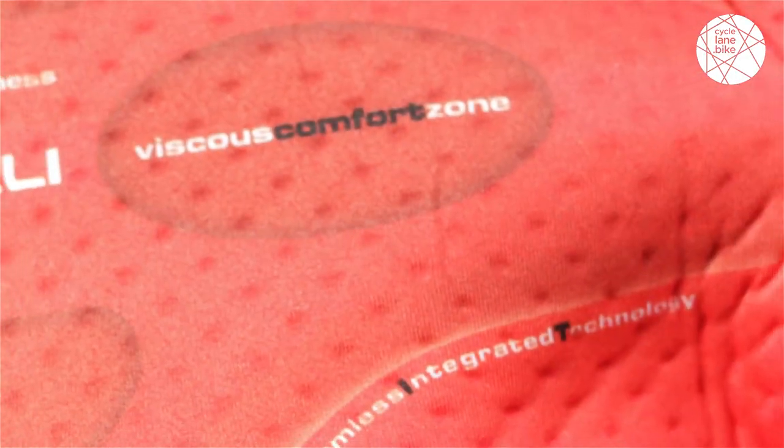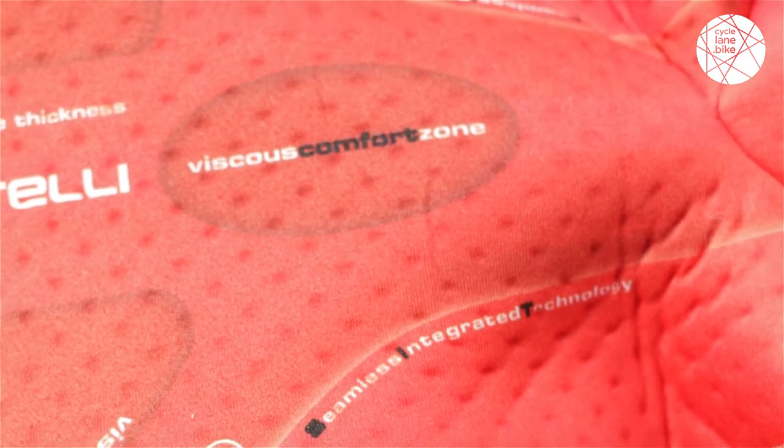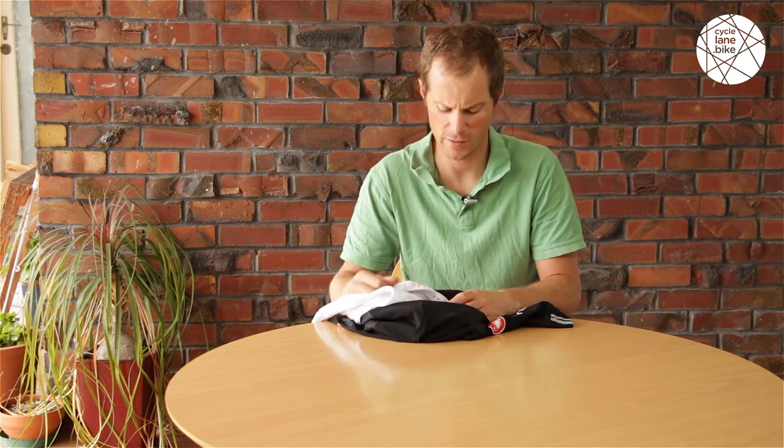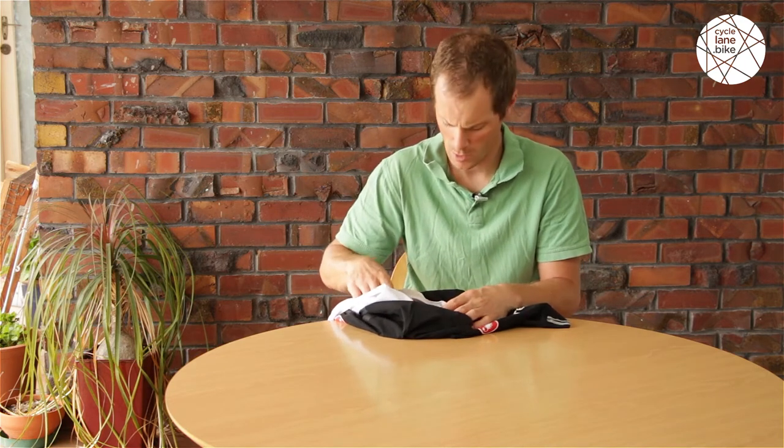Inside, the chamois, one of the most important elements of any cycling short, it's a multi-layered chamois with different thicknesses. In the center, it is around about a 12mm panel, and out to the sides it's more of a 6mm panel, and it features the viscous comfort zone, which is Castelli's way of saying that they have an air pocket in there, in the foam.